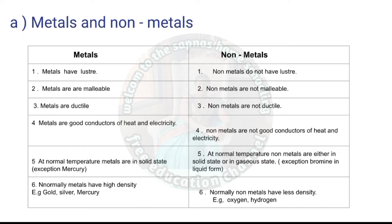Exception: bromine exists in liquid form normally. Normally metals have high density — examples: gold, silver, mercury. Normally non-metals have less density — examples: oxygen and hydrogen.